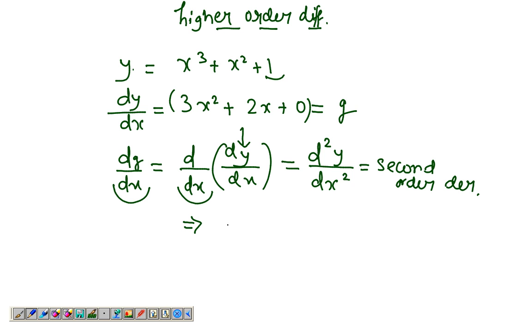So this would be nothing but d over dx of d, which is 3x² + 2x, giving you 6x + 2.